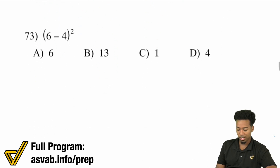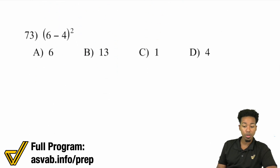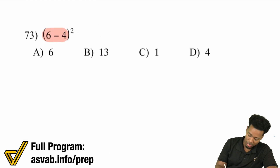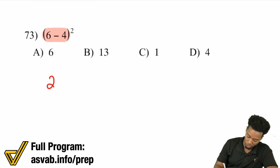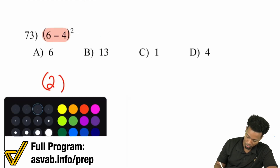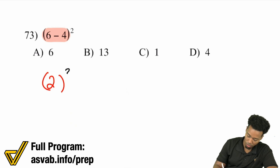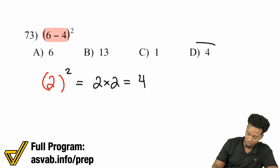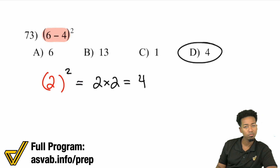Number 73: we have (6 minus 4) all squared. Taking care of that parentheses — 6 minus 4 is equal to 2. And then we square that, which is just going to be 2 times 2, and that is 4.